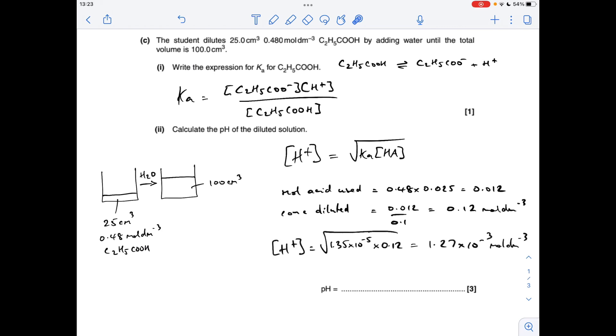We'll bring in the square root of Ka times HA expression now. So H+ concentration is the square root of that times that concentration. We've got an H+ concentration of that. What we need to do now is minus log that to get the pH, which gives a pH of 2.90.